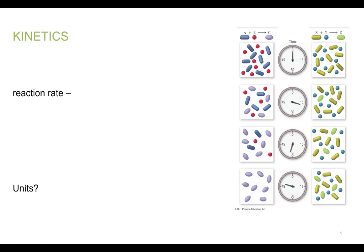Our next topic in general chemistry two is kinetics. Kinetics is the study of how fast or slow a chemical reaction occurs.